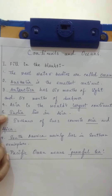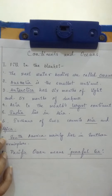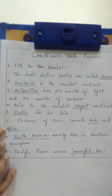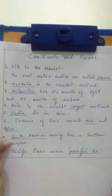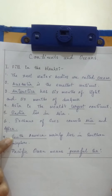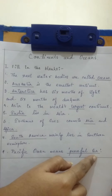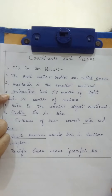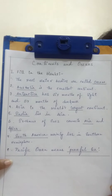Number 5: India lies in Asia. Number 6: Isthmus of Suez connects Asia and Africa. Number 7: South America mainly lies in the Southern Hemisphere. Number 8: Pacific Ocean means Peaceful Sea. All these underlined words should be drawn with the help of a scale. After finishing this, draw an ending line with the help of a scale.